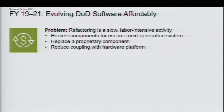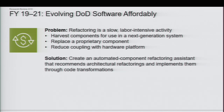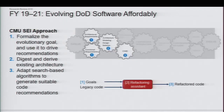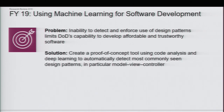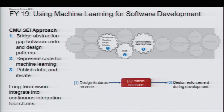How do you harvest these components, replace them with proprietary ones, and reduce the coupling between the software as well as the hardware? Our approach is to look into an automated component refactoring assistant — seeing how we can recommend architecture refactorings, formalize them, and develop algorithms to create the recommendations. The next project is using machine learning for software analysis. Can we put AI and machine learning to use for software engineering efficiency? This is a small pilot project to see if we can detect design problems, particularly focusing on model-view-controller, which is very common across the board, and develop some detection and put them into continuous integration pipelines. The long-term vision: rather than waiting longer, can we bring detection as well as fixing earlier to the development lifecycle and enable change earlier?